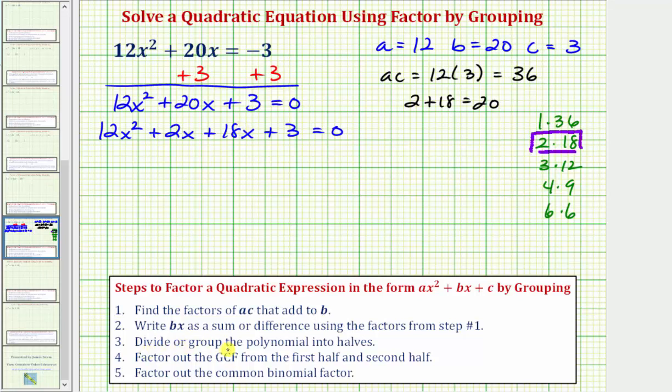Step three, we now divide or group the polynomial into halves, and because we have four terms, the first group or first half is going to be the first two terms, and the second group or second half is going to be the second two terms.